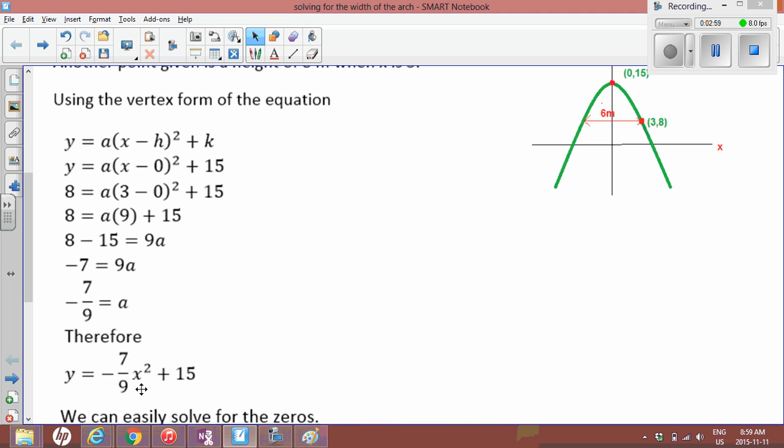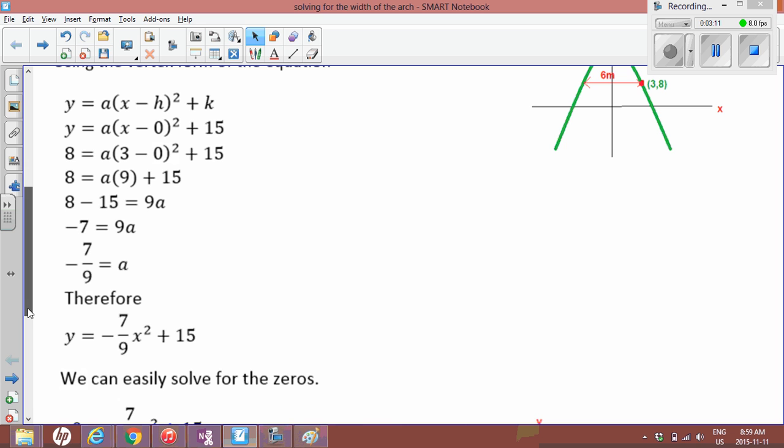And our y value or k is 15, we just leave that in there. And we have substituted our a value so it's negative 7 over 9 x² + 15. So that's our vertex form of the equation, it's also our standard form of the equation. You'll notice that the y-intercept is 15 so that's answered part of the question, that's the equation.